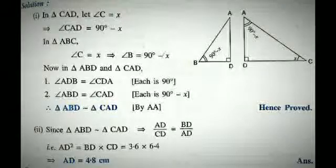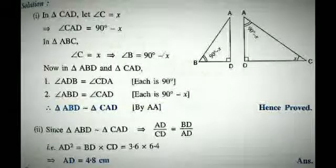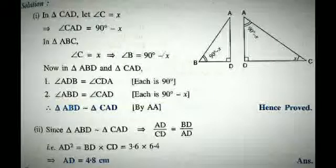Solution. The figure is split into two parts. Let angle C be X. Then since angle ADB is 90 degrees, the upper angle will be 90 minus X. Since angle A is given as 90 degrees, the left side angle will be X. So angle D in the left figure is again 90, and angle B will be 90 minus X. Therefore the triangles can be proved similar by the AA axiom.